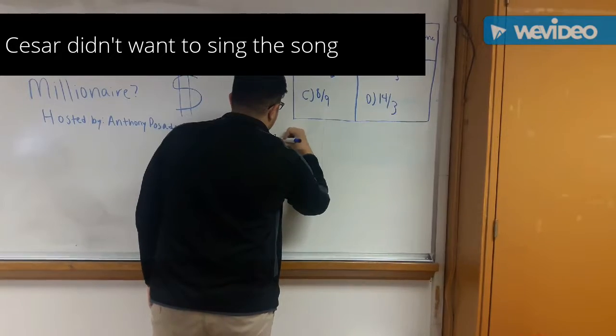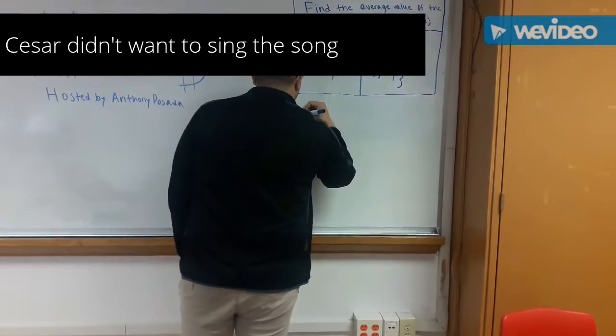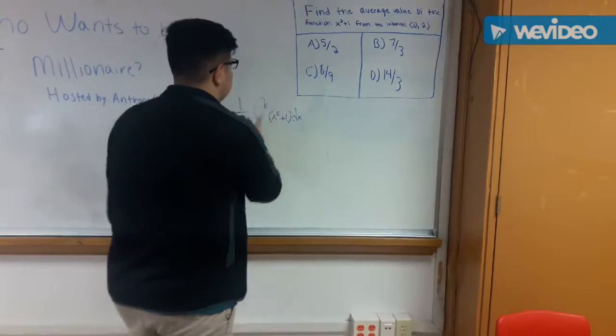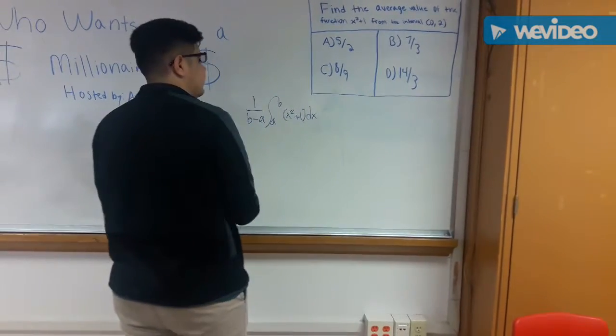Alright, now remember, your 0 is your a, and your 2 is your b, and then work it out as a regular integral problem.